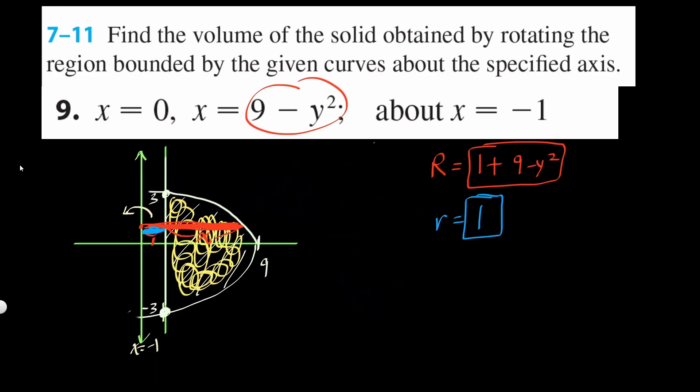So let's set up the integral now. We're going to integrate it. We're going to take pi out, big R squared minus little r squared, everything dy. And then we're going to set our lower limit as negative 3, upper limit to be positive 3.